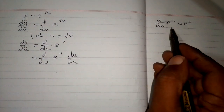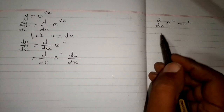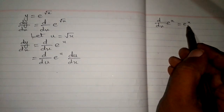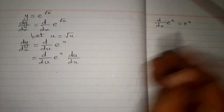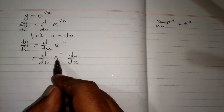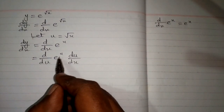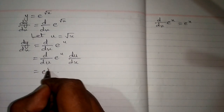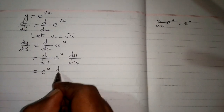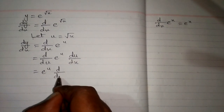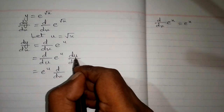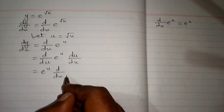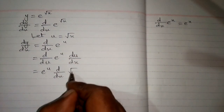Now we can apply the formula that the derivative of e to the power x is e to the power x. So the derivative of e to the power u is e to the power u, multiplied by d/dx of u, where u = square root of x.